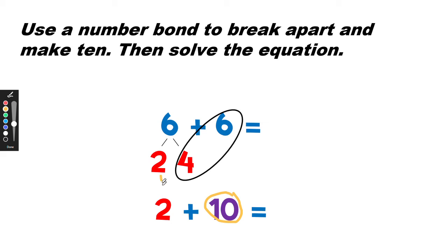And we have 2 left over and we moved it down there. Now we have a new equation. 2 plus 10 equals? Answer: 2 plus 10 equals 12.